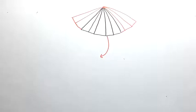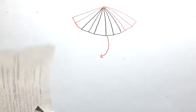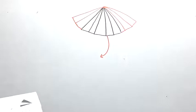Question number 6. An umbrella is made by stitching 10 triangular pieces of cloth of two different colors. Each piece measures 20 centimeters, 50 centimeters, and 50 centimeters.